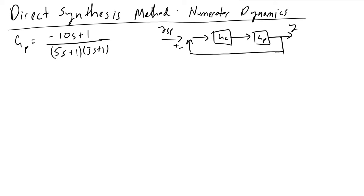Things are going to get a bit more complicated because now we have this term in our numerator, minus 10s plus 1, to take into account as well as the possibility of oscillatory behavior thanks to the second degree of our denominator.